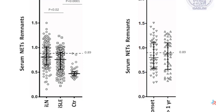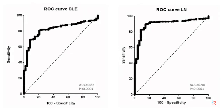Levels were not correlated with the timing of the disease. Here are patients with new onset lupus nephritis, and here after one year of disease. ROC curves showed an area under the curve that was very high, both for lupus and for lupus nephritis patients.